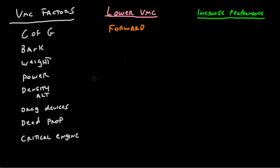We've already talked about center of gravity. Now let's talk about how bank and weight affect VMC. If you want your VMC to be lowered, what you're going to want is you'll want 3 to 5 degrees of bank. Actually, you'll want greater bank.